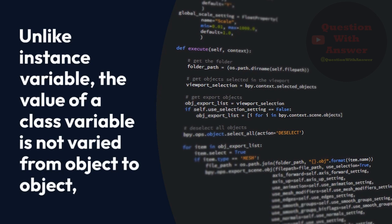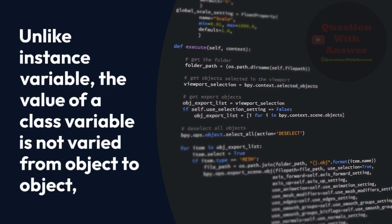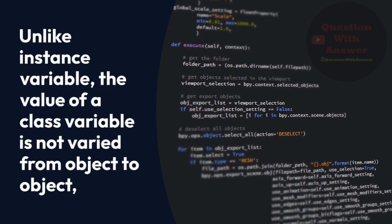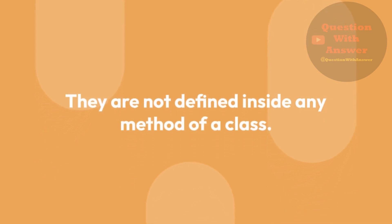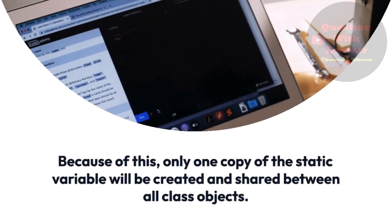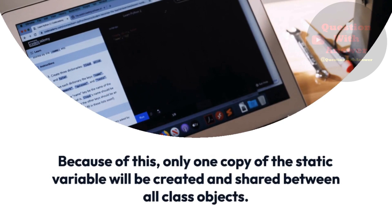Unlike instance variable, the value of a class variable is not varied from object to object. In Python, class variables are declared when a class is being constructed. They are not defined inside any method of a class. Because of this, only one copy of the static variable will be created and shared between all class objects.